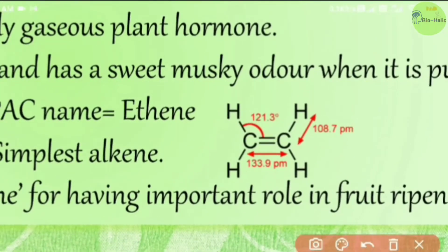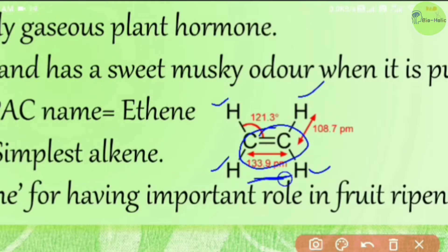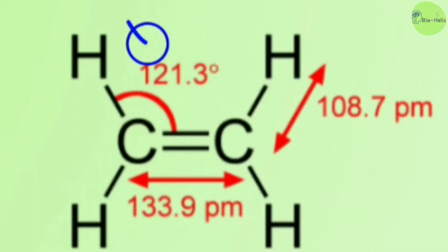In the structure of ethylene, both carbon atoms share a double bond, and the remaining valences are filled by four hydrogen atoms. The carbon-carbon double bond has a length of about 133.9 pm, and the carbon-hydrogen bond has a length of 108.7 pm. The angle between the carbon and hydrogen atoms from the inner aspect is 121.3 degrees.